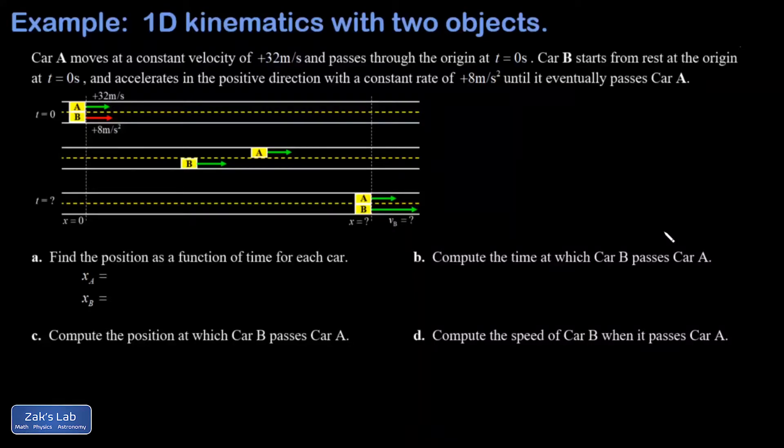In this problem we're doing one-dimensional kinematics with two moving objects, so the diagram gets a little bit complicated. At t equals zero, car A is going through the origin at 32 meters per second, and car A moves with constant velocity, so it's a very simple motion—it just keeps going at 32 meters per second.